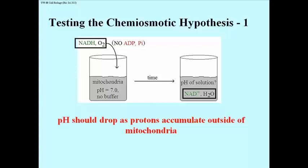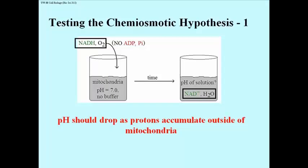That solution becomes acidic. Note that for this experiment to work, the solution had to be unbuffered. When this experiment was actually done, the pH of the solution did drop, supporting the chemiosmotic hypothesis.